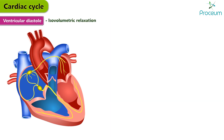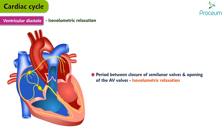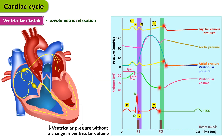Isovolumetric relaxation. The period between closure of the semilunar valves and opening of the atrioventricular valves is termed isovolumetric relaxation. It is characterized by a precipitous fall in ventricular pressure without a change in ventricular volume. The beginning of the isoelectric TP segment is recorded on the EKG.